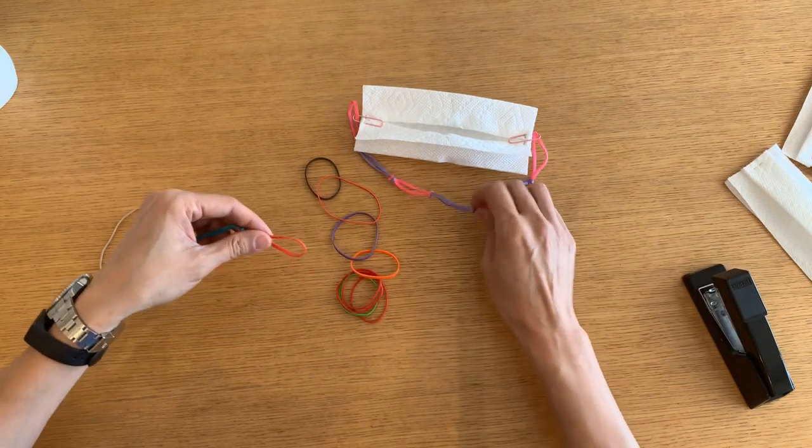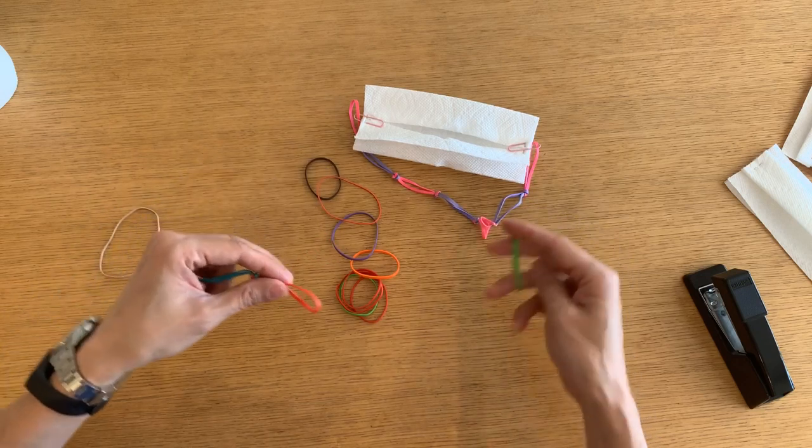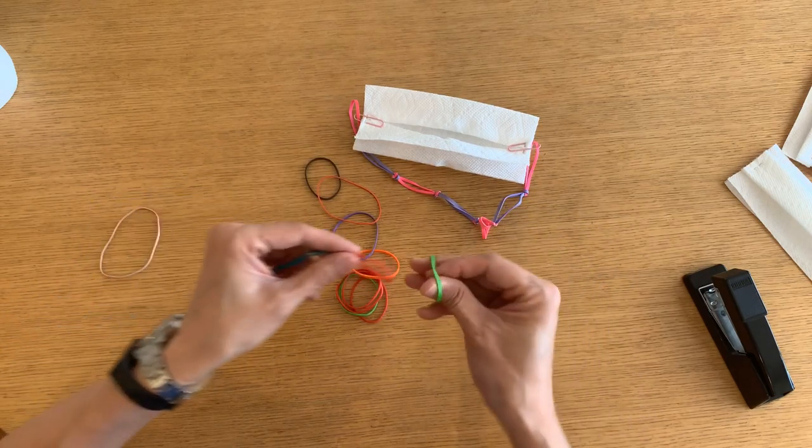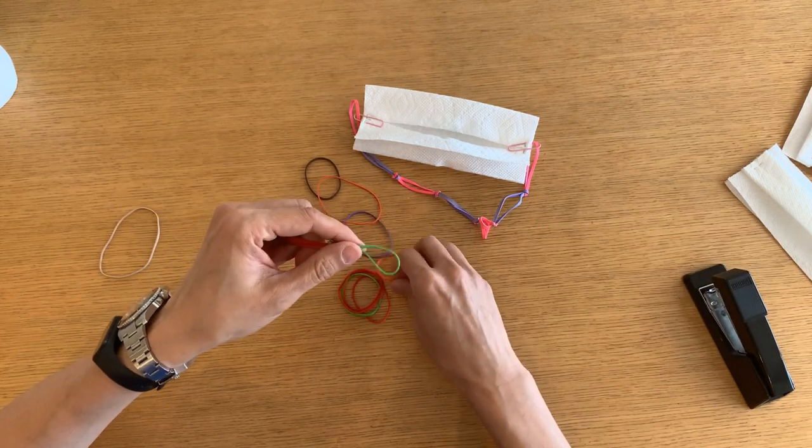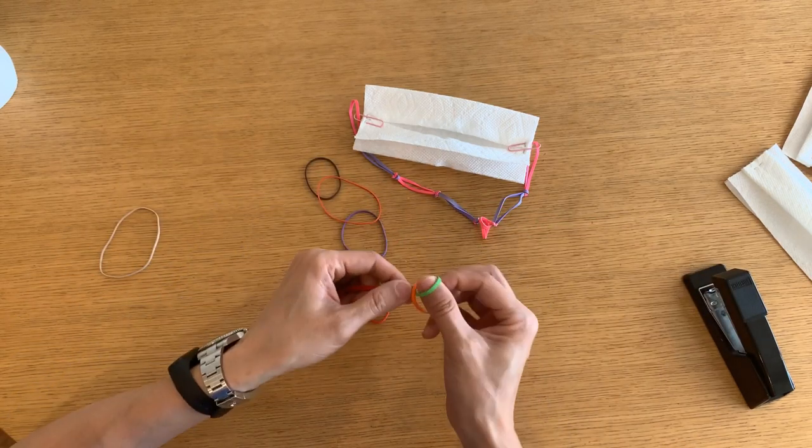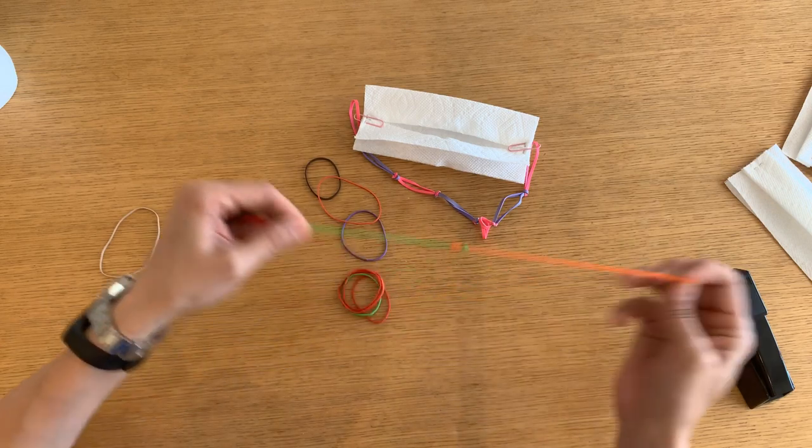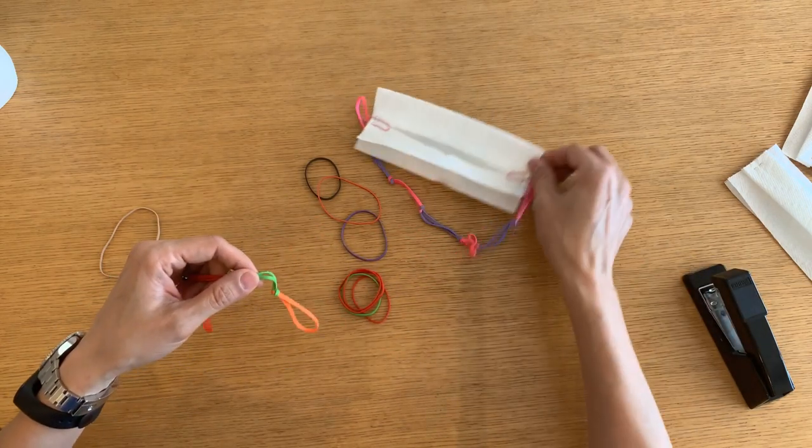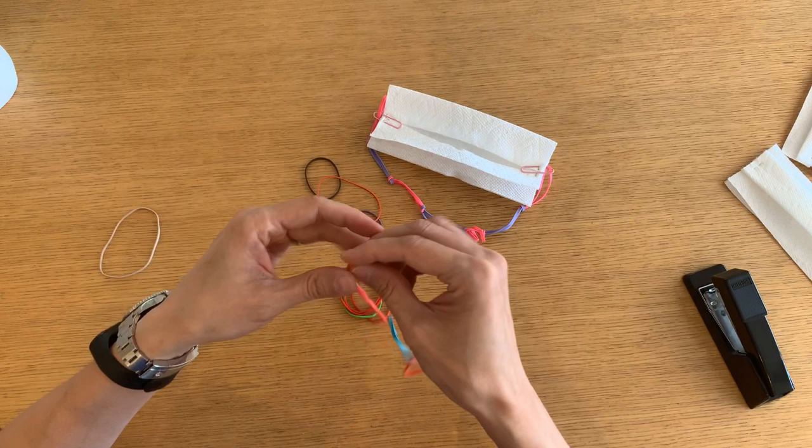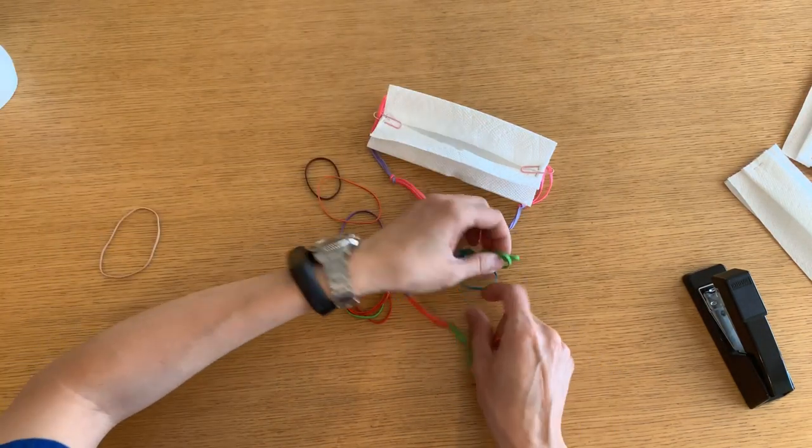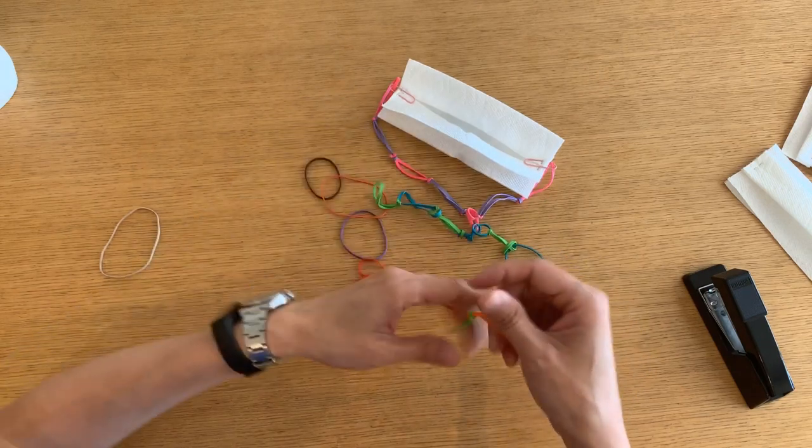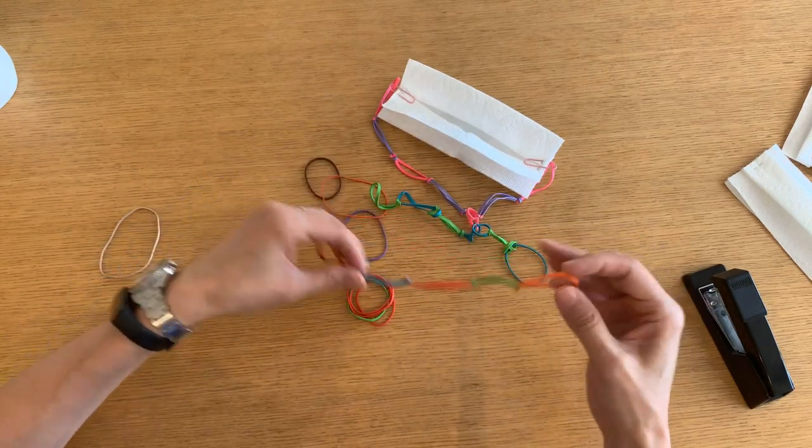And for children, you might only need five. For adults, you might need six or seven. Again, loop, pull. And for kids, I made this one for my daughter with a pink paper clip, lavender, and pink, so you can make it fun for the kids. This one might be, a boy might like this one, or not. And that's how you make the link.